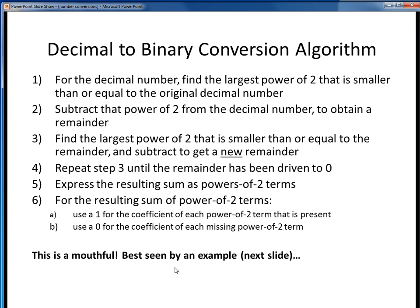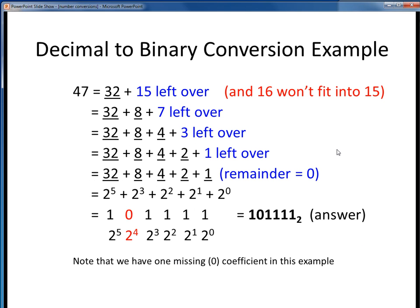This set of steps is probably a bit confusing here in the abstract, so let's take a look at a concrete example of this. Here's an example of performing a decimal to binary conversion. Suppose we want to take decimal 47 and convert it into binary.